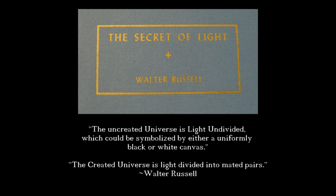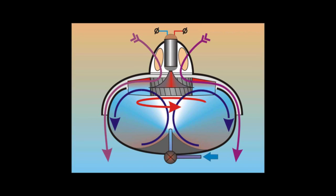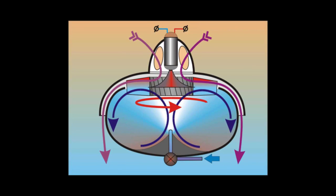Furthermore, he said, the created universe is light divided into mated pairs. Something like this diagram of an over-unity implosion turbine designed by Victor Schauberger, for example.